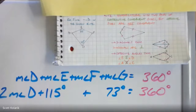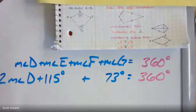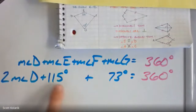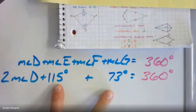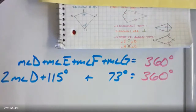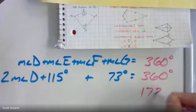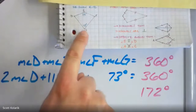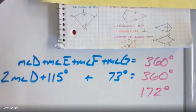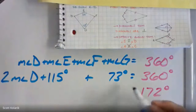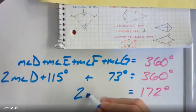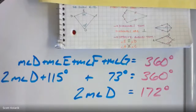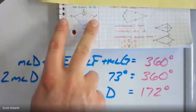Now it's straightforward algebra. I add 115 and 73 to get 188 degrees, then subtract that from 360, leaving 172 degrees. Visually, within this quadrilateral, if one angle is 115 and another is 73, there are only 172 degrees left to split between angle D and angle F. Since they must match, I divide 172 by 2.